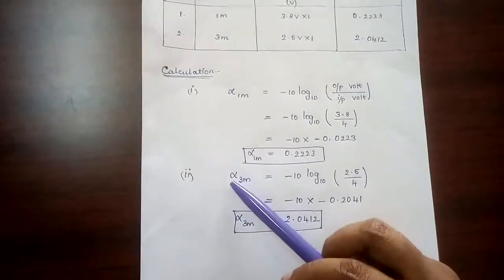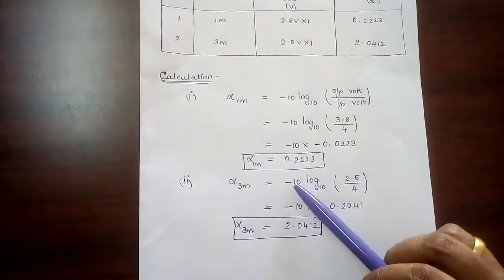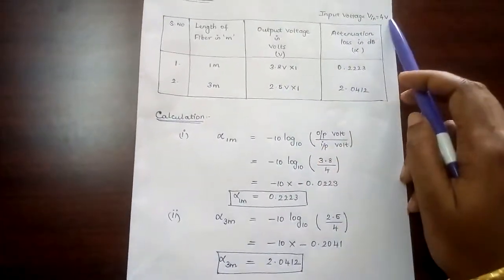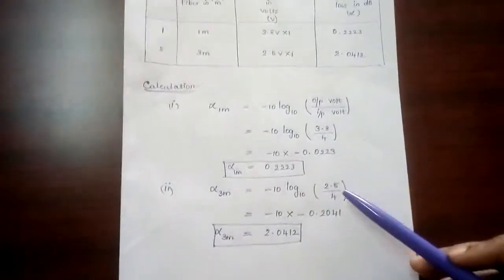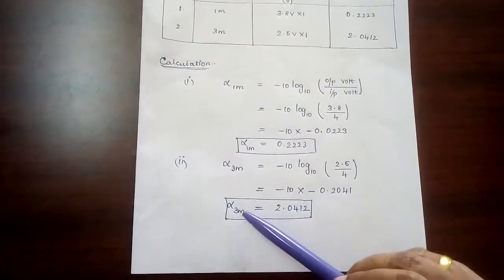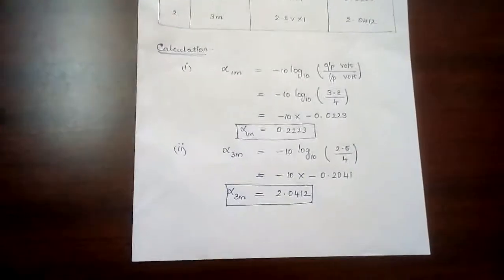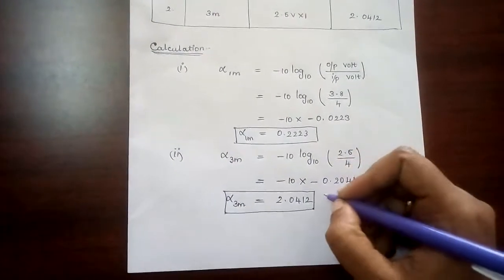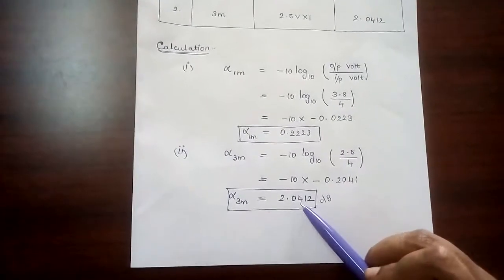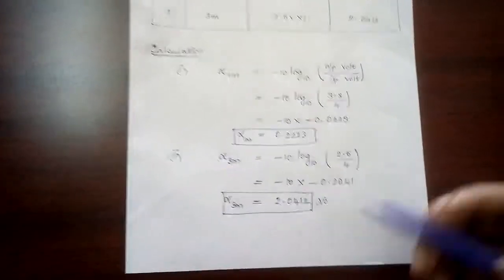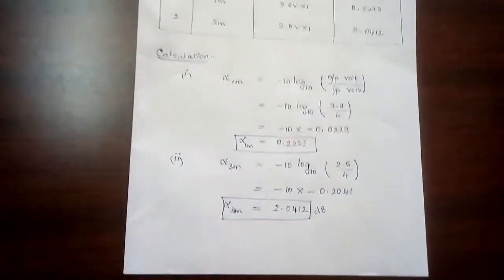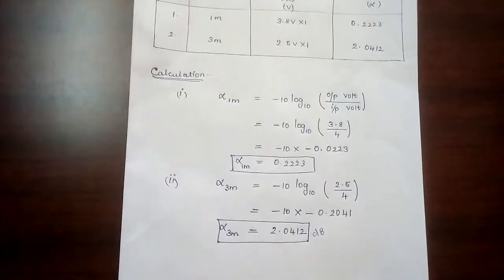Next, alpha for 3 meter cable: alpha = minus 10 log₁₀ (2.5 / 4). The output for 3 meters is 2.5V divided by input 4V. The unit is dB. From this we can find that as distance increases, attenuation is higher — the greater the distance, the greater the attenuation.